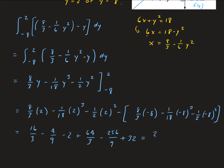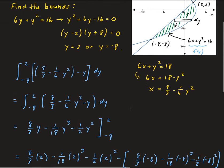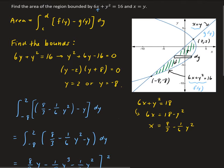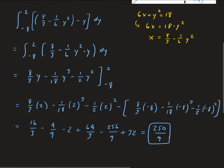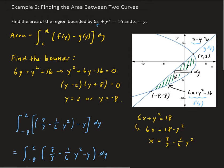So that gives us 250 over 9, and that's the area of the region you see in the figure. If the functions are in terms of y, we always do right minus left, take the difference, and the bounds will be in terms of y.